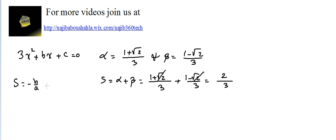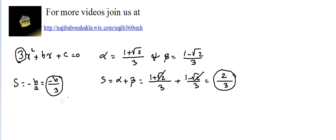We know that the sum in the quadratic equation equals minus B over A. Here A equals 3, so the sum minus B over 3 equals 2 over 3. This clearly gives minus B equals 2, which implies B equals minus 2.